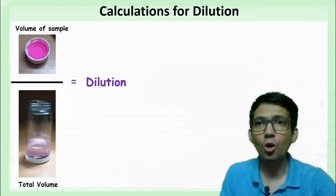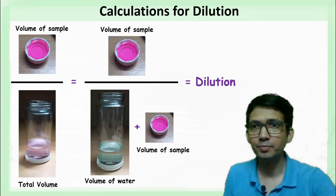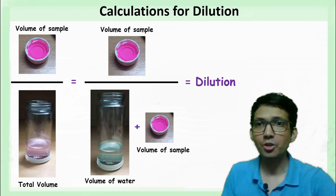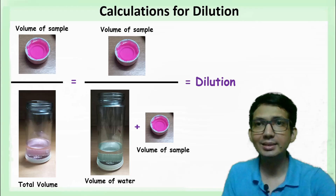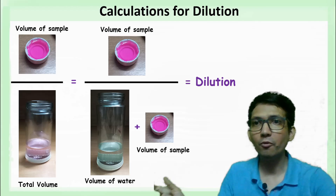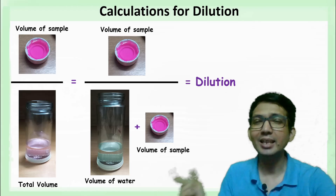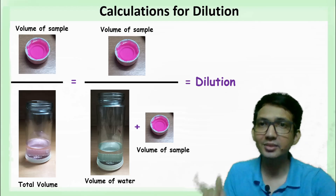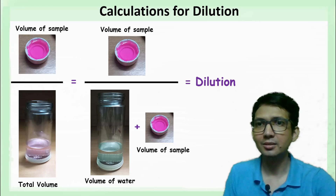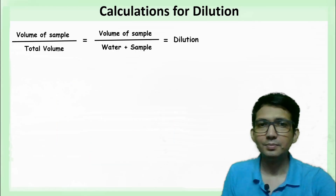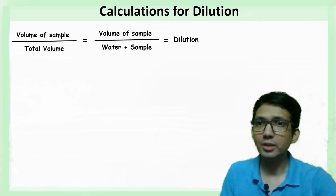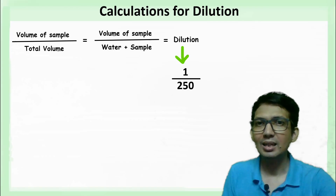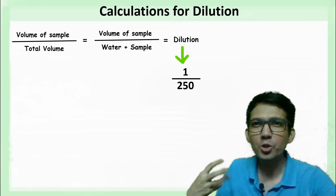To summarize: dilution is the ratio of sample volume to total volume, and total volume is the sum of the volume of water and the volume of sample taken.